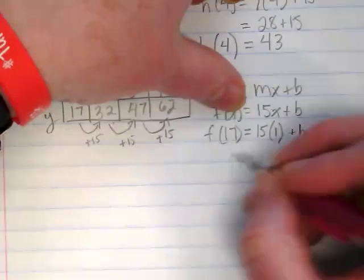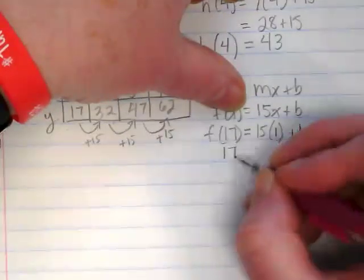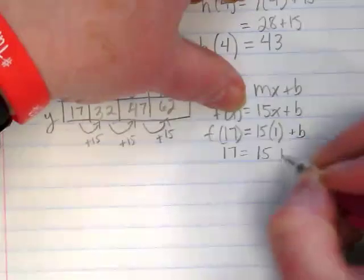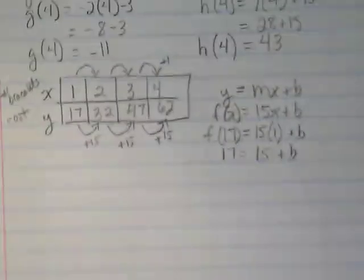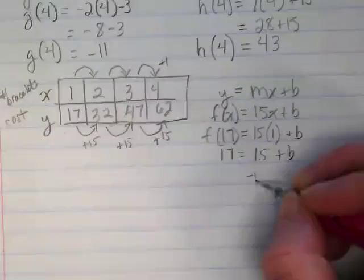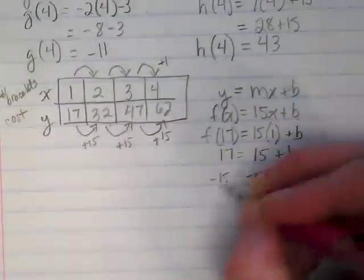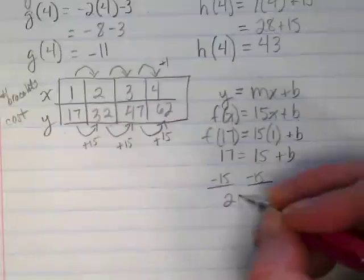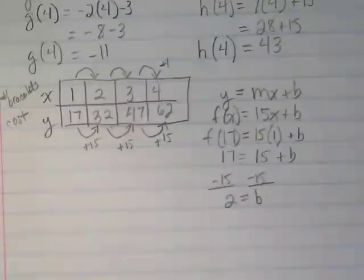So we're going to solve this here. We get 17 equals 15 plus b. Sort of like literal equations. We're solving for b this time, aren't we? And I'm going to subtract the 15. And we get 2 equals b.